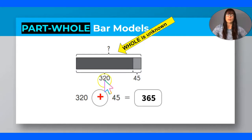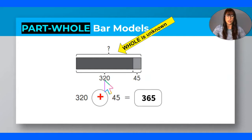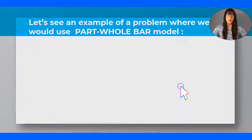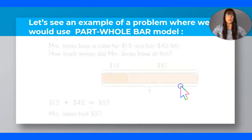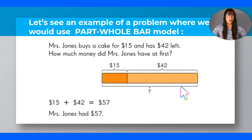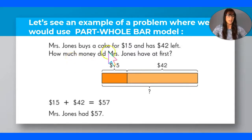For example, we could say: there are 320 boys and 45 girls — how many children are there in all? That would be an example of your part-whole bar model. Let me show you another example of where we would use this part-whole bar model.